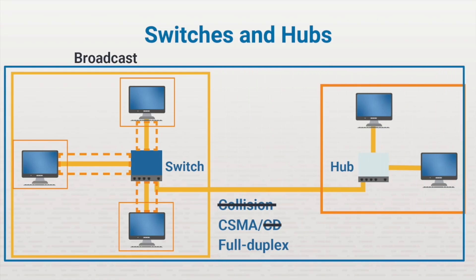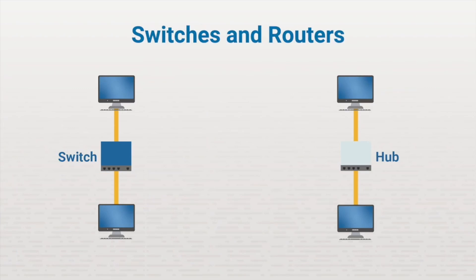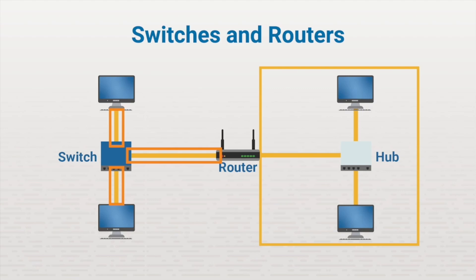Remember that the broadcast domain includes all the devices that are connected to the same switch. Now let's look at another example. Suppose we have a switch that's connected to a router, and the router is connected to a hub on the other side. Where are the collision and broadcast domains in this example? Collision domains on a switch are created by each switch port, so we simply look at each switch port to identify the collision domains — here, here, and here. On the hub, the collision domain includes all the devices connected to the hub, including the router interface on that side. So in this network, we have four collision domains. Collisions are still possible between all the devices on the hub, but collisions on the switch side are eliminated.